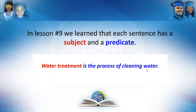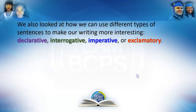So let's look back to lesson number 9. In lesson 9, we learned that each sentence has a subject and a predicate. If we look at the sentence below, we can see that 'water treatment' is the subject and 'is the process of cleaning water' is the predicate that tells us what the subject is doing. We also looked at how we can use different types of sentences to make our writing more interesting. There are four types of sentences: declarative, interrogative, imperative, exclamatory.